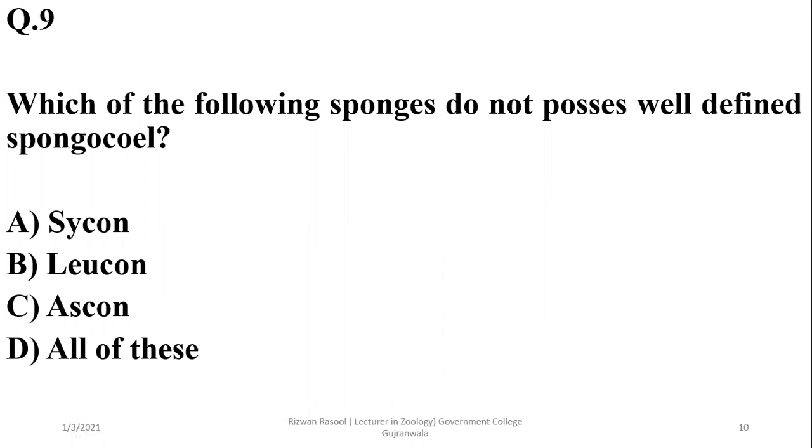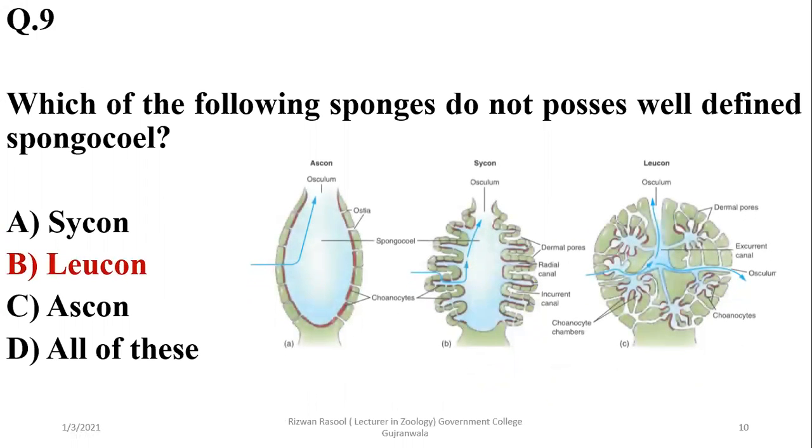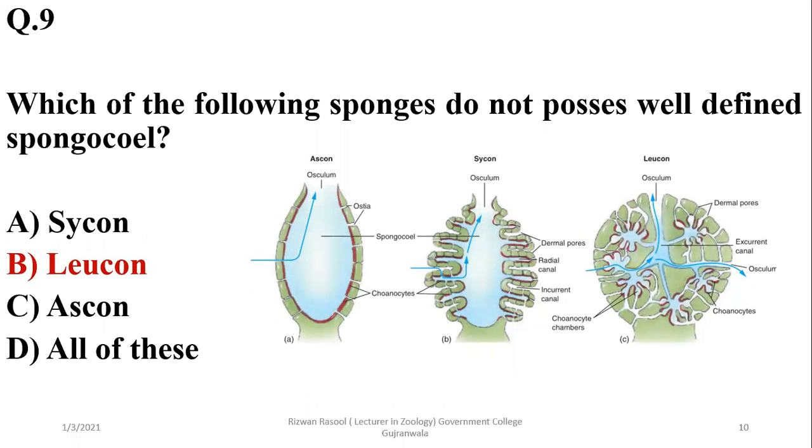Sponges which have the highest level of body wall folding usually do not have a spongocoel or body cavity. Leucon body form is the answer because they have the highest infolding of body wall and do not possess a spongocoel, which is observed in ascon and sycon type sponges.